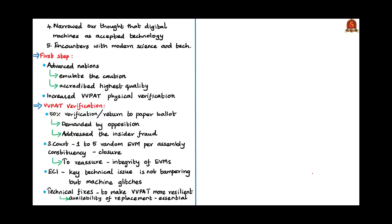In the context of technology, we have narrowed our mind and convinced ourselves that digital machines are the only accepted technology, sweeping other choices aside. What needs to be done is to emulate the caution of advanced nations and possess quality as high as theirs. Another step can be increasing the VVPAT physical verification. The opposition political parties demanded a 50% VVPAT count, which could have amounted to 125 machines per constituency, but would have addressed the remote possibility of fraud or a return to the paper ballot system. As a result, the Supreme Court provided a reasonable proportion of 5 random EVMs per Assembly constituency, increased from 1, to reassure the integrity of EVMs.